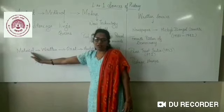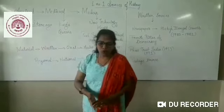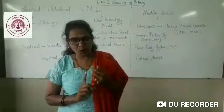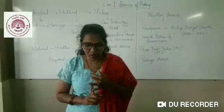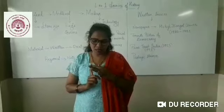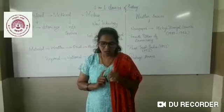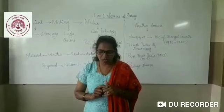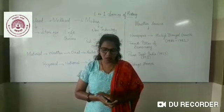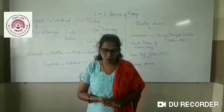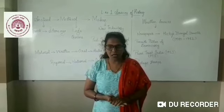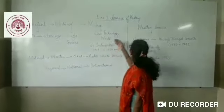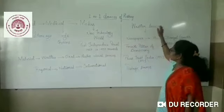Material sources are bifurcated into newspapers, periodicals, diaries, reference books, correspondence and archives, government records, postage stamps, and encyclopedias. Now let us look at written sources.